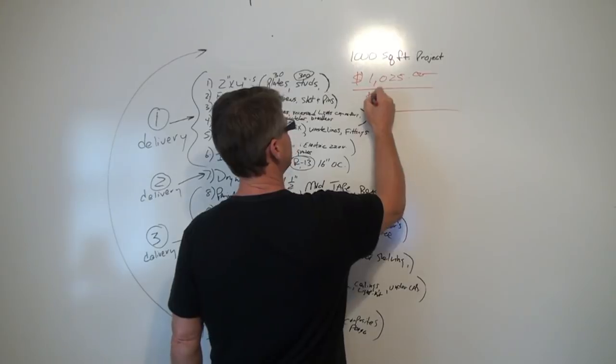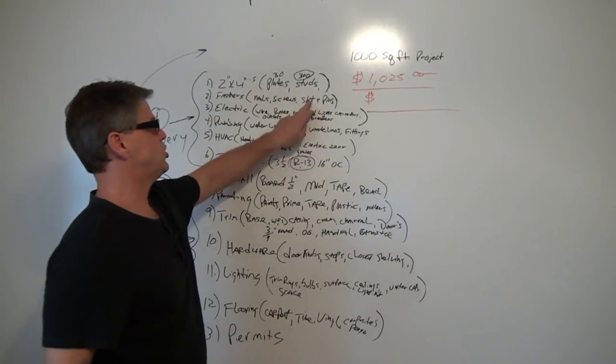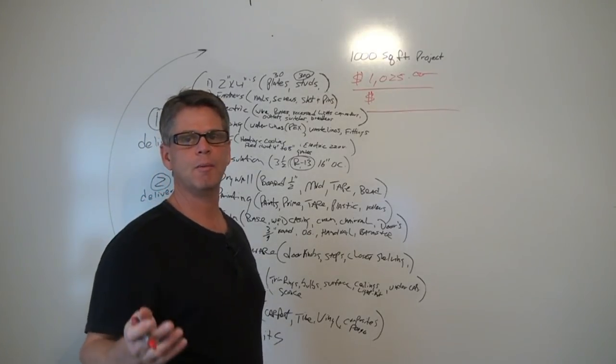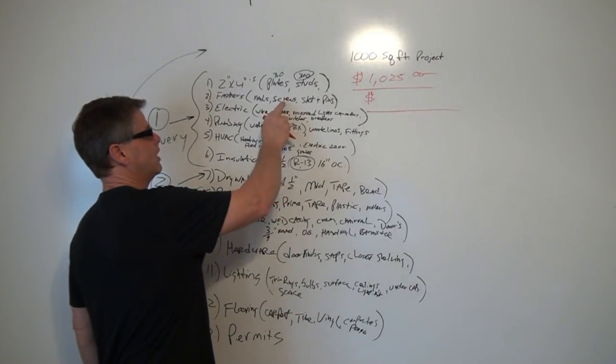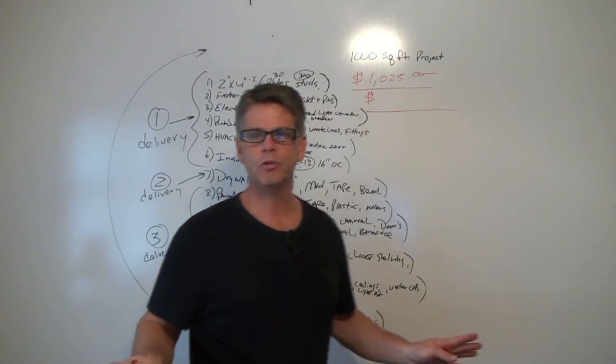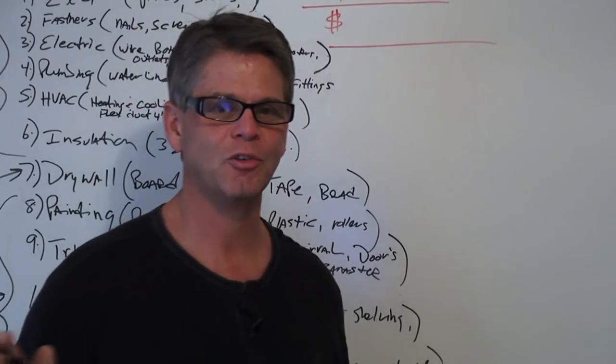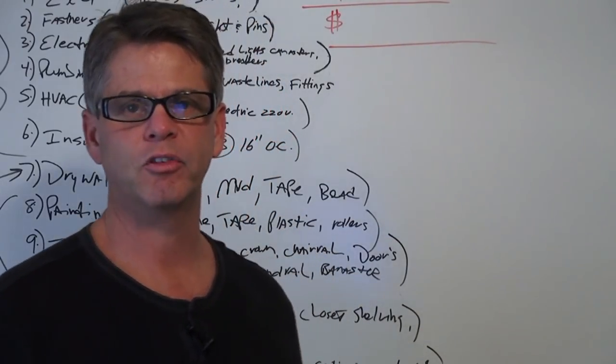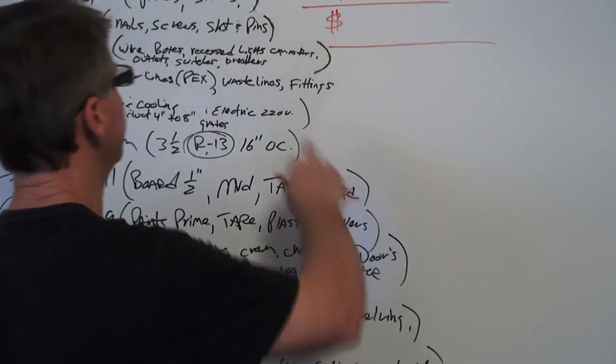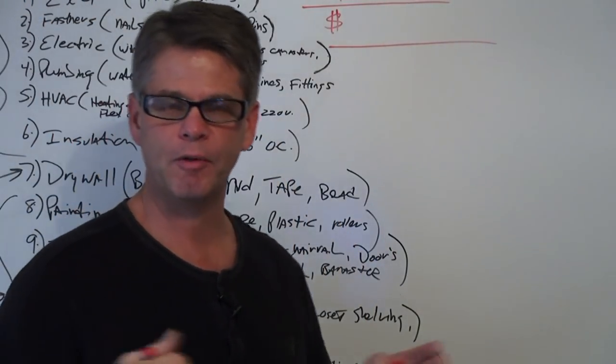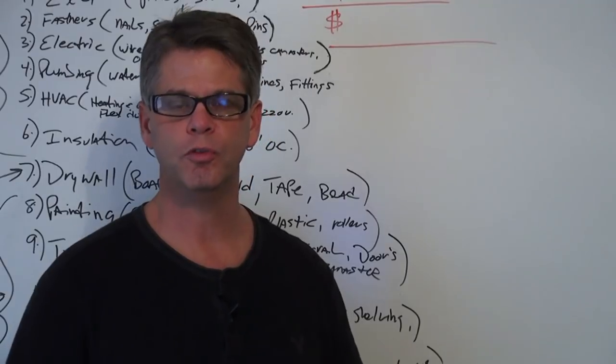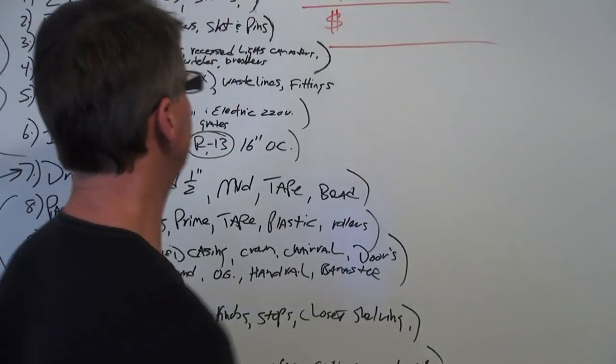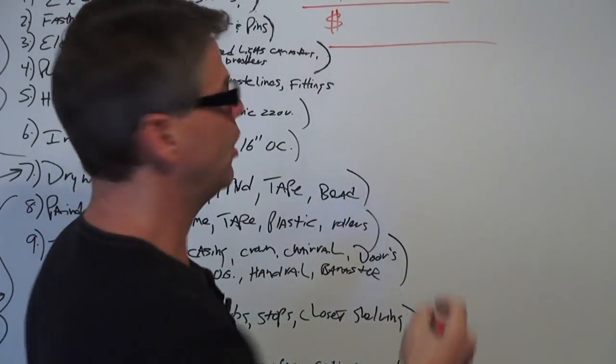Fasteners. We talked about those yesterday. The nails, the screws, the shot and pins. I'm normally getting one box of nails, a 50 pound box of nails. There's generally about 2,000 nails in that box. I'll get a 50 pound box of drywall screws. Shot and pins we talked about yesterday for my ramset gun to shoot the walls to the floor. I'm getting two boxes of each. Two boxes of shot, two boxes of pins. And the price for all that stuff is $120.